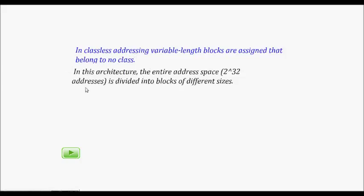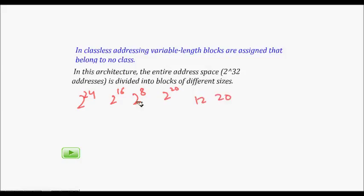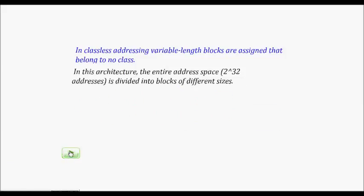In this architecture we have 2 to the power of 32 addresses divided into different sized blocks. You don't have a fixed size — you can have 2 to the power of 20 hosts by having just 12 bits for the network ID and 20 bits for the host ID. Or you can have around 5000 hosts by having 20 bits for the network and 12 bits for the host ID. This gives you the flexibility that's most important.